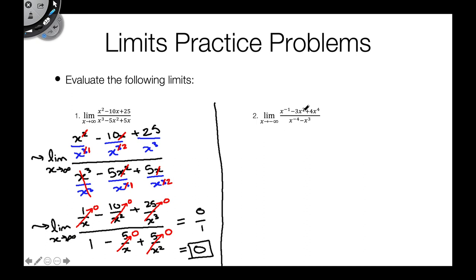Next question. We have a similar-looking rational function, but in this case x goes to minus infinity. The first thing we do, once again, is divide by the highest power in the denominator. In this case it's also x cubed, so we're going to divide everything by x cubed.